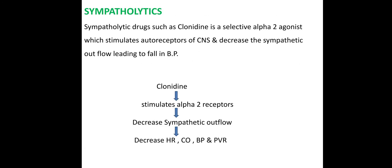Next are sympatholytic drugs. Sympatholytic drugs stimulate alpha-2 receptors, which reduces sympathetic outflow. This leads to a decrease in heart rate, cardiac output, blood pressure, and peripheral vascular resistance.